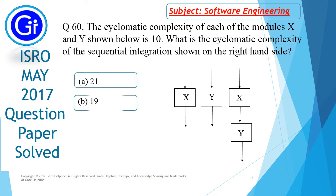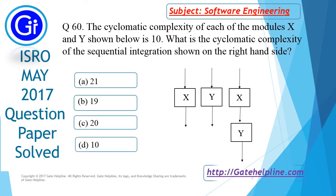The options are A 21, B 19, C 20, and D 10.